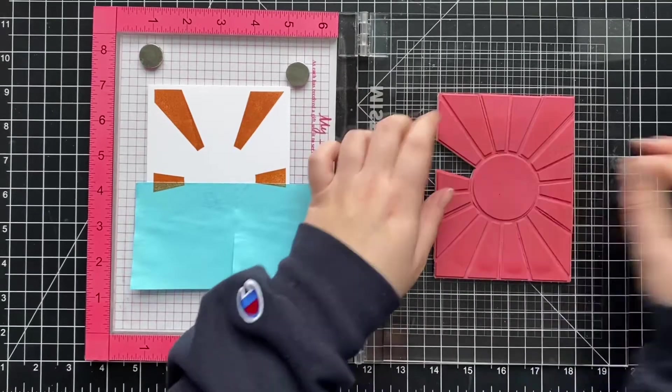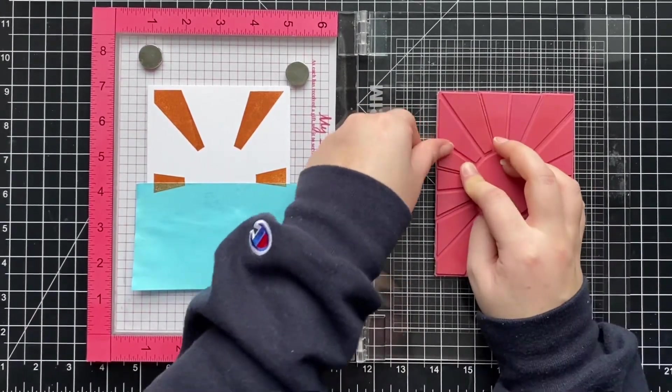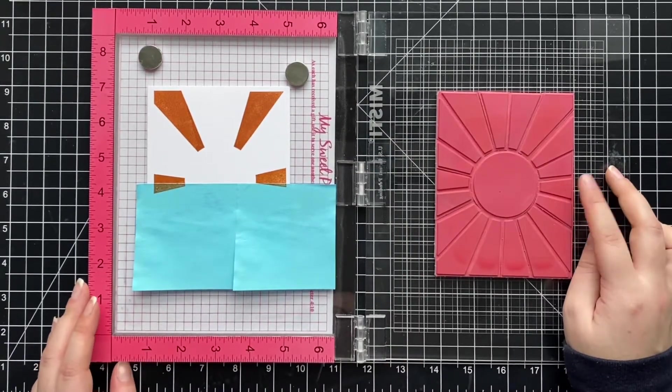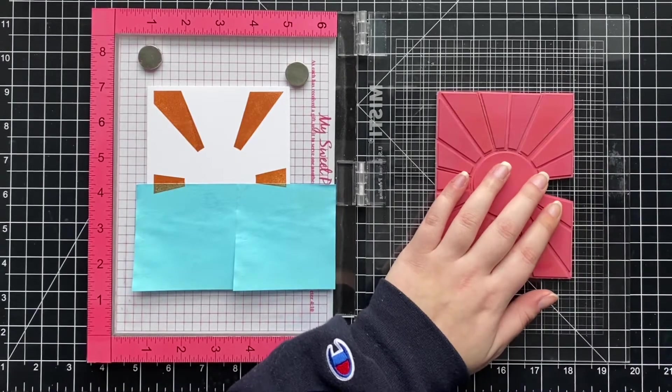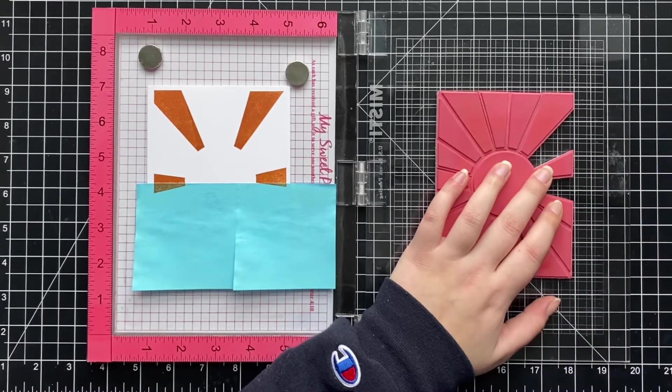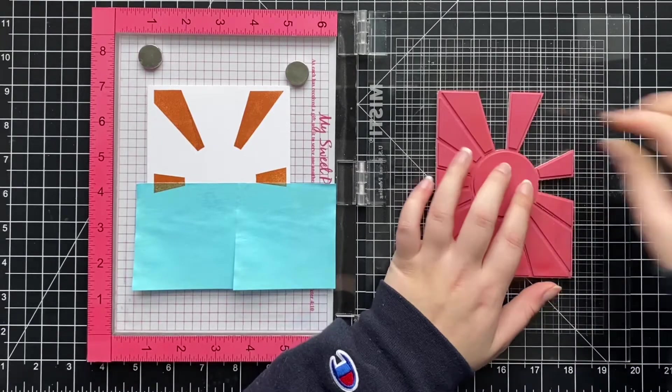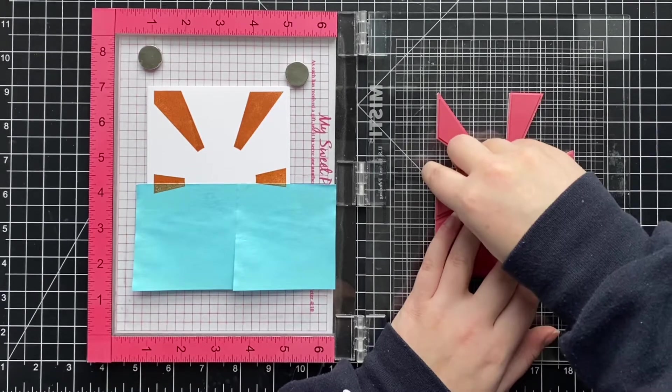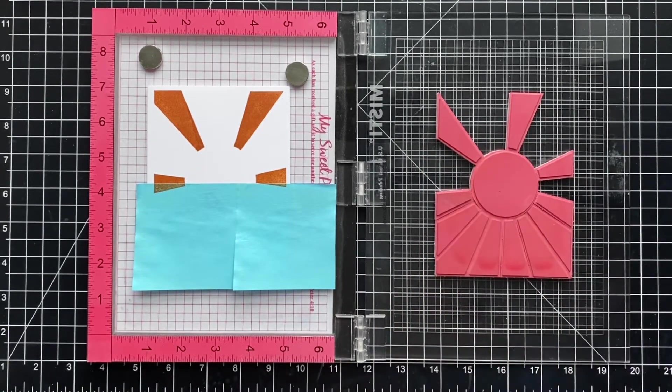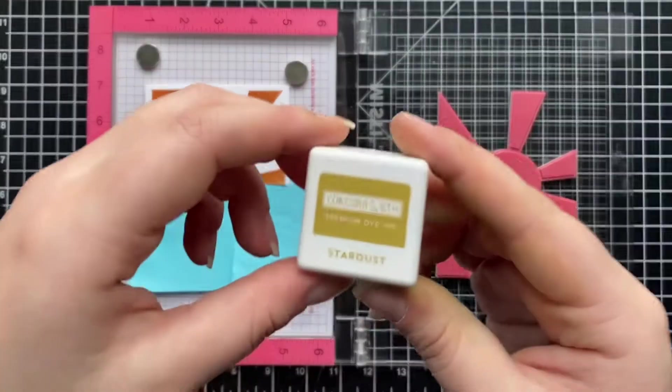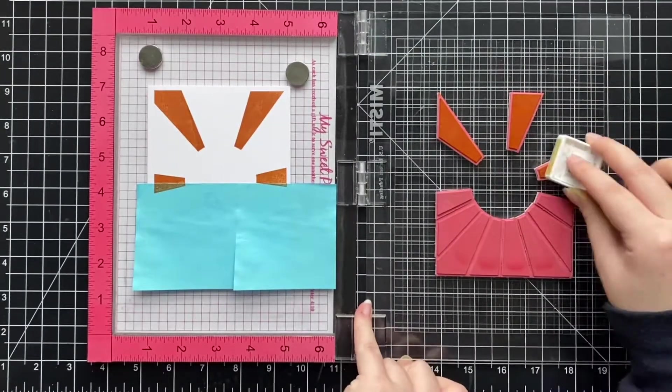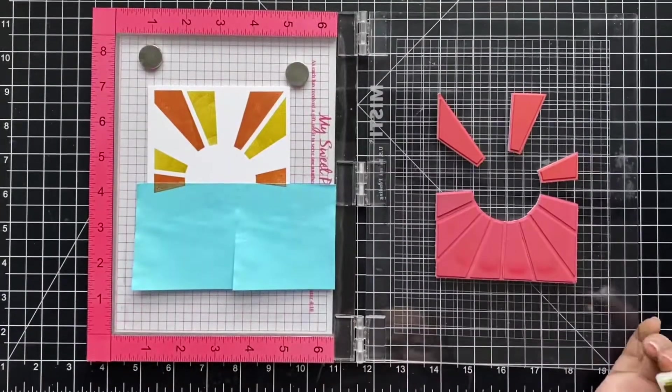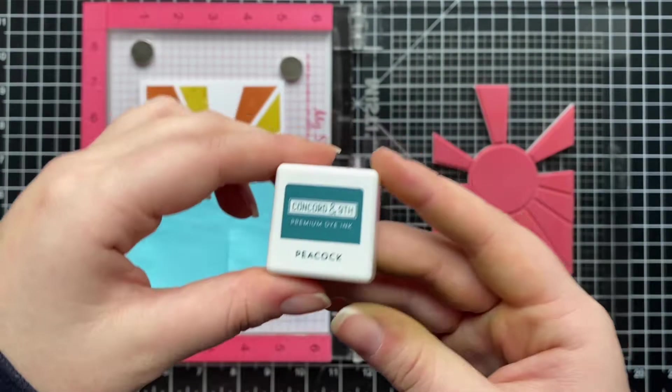Now I'm going to pop all the pieces back into the stamp and then take out the ones that I want for the second layer of stamping. I'm doing every two, so it's kind of like a three color rotation or pattern. And the other colors I will be using are Stardust from Concord and 9th and Peacock from Concord and 9th.